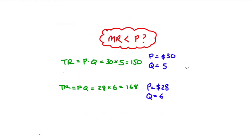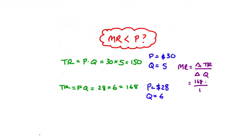Let me calculate our marginal revenue. The formula for marginal revenue in discrete cases like this is just the change in total revenue divided by the change in Q. The change in Q is from Q=5 to Q=6, so that's just one. And my change in total revenue — we get the new total revenue and subtract the old total revenue. The difference is 18. So 18 over 1 equals 18.